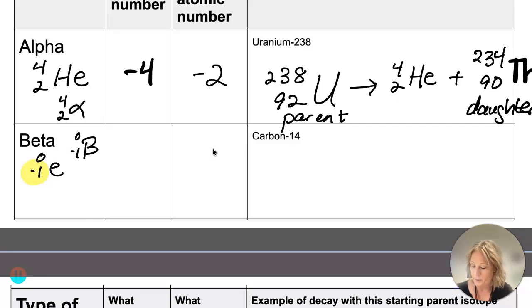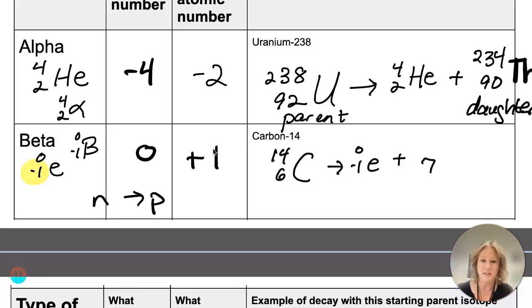So if I do this example with you, and I get that beta particle, what's happening then is a neutron is changing into a proton. So my atomic number is going to go up by 1, my mass number is going to stay the same, and then I get this new daughter element or isotope.